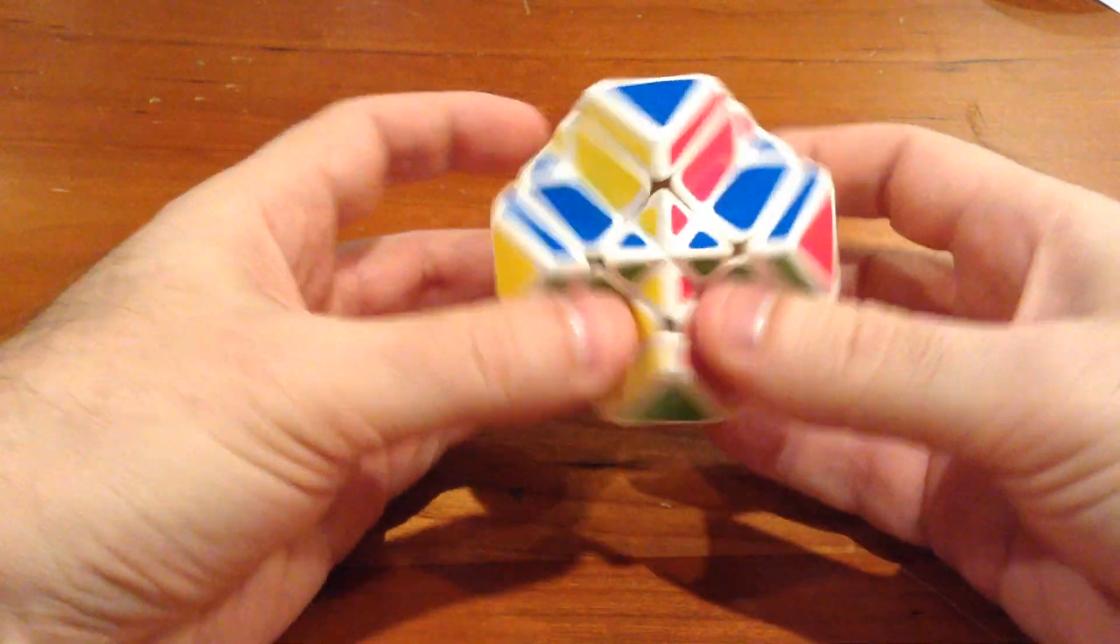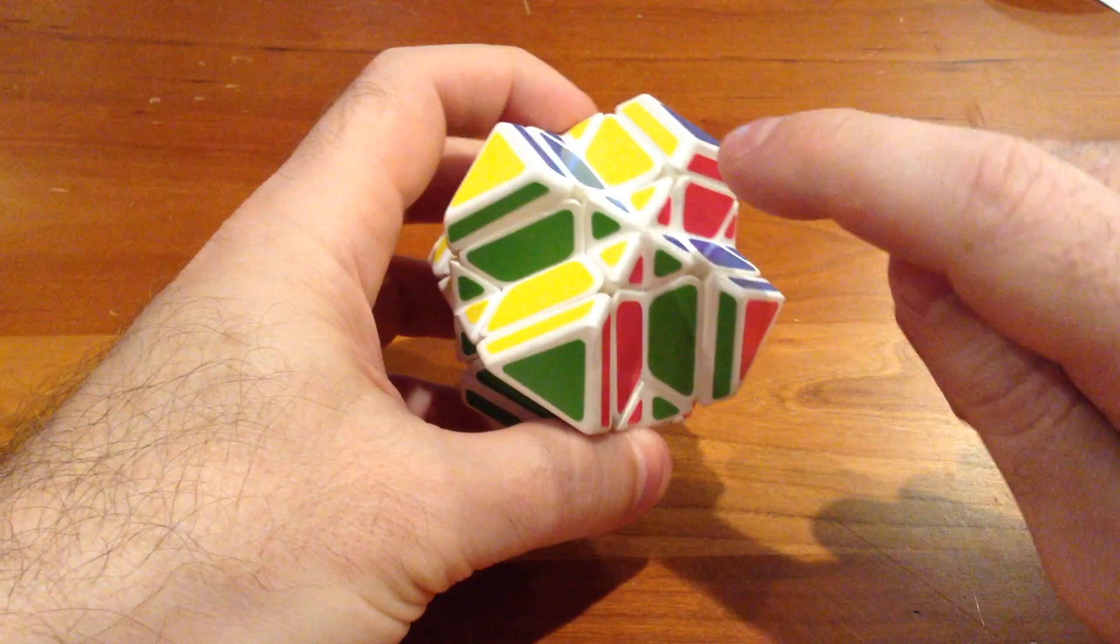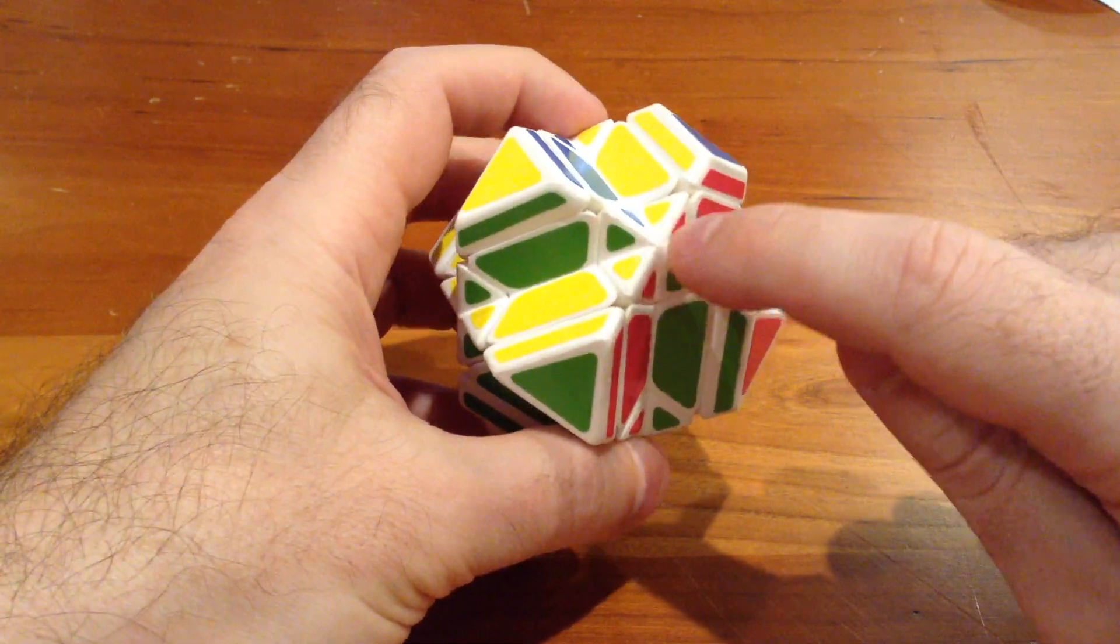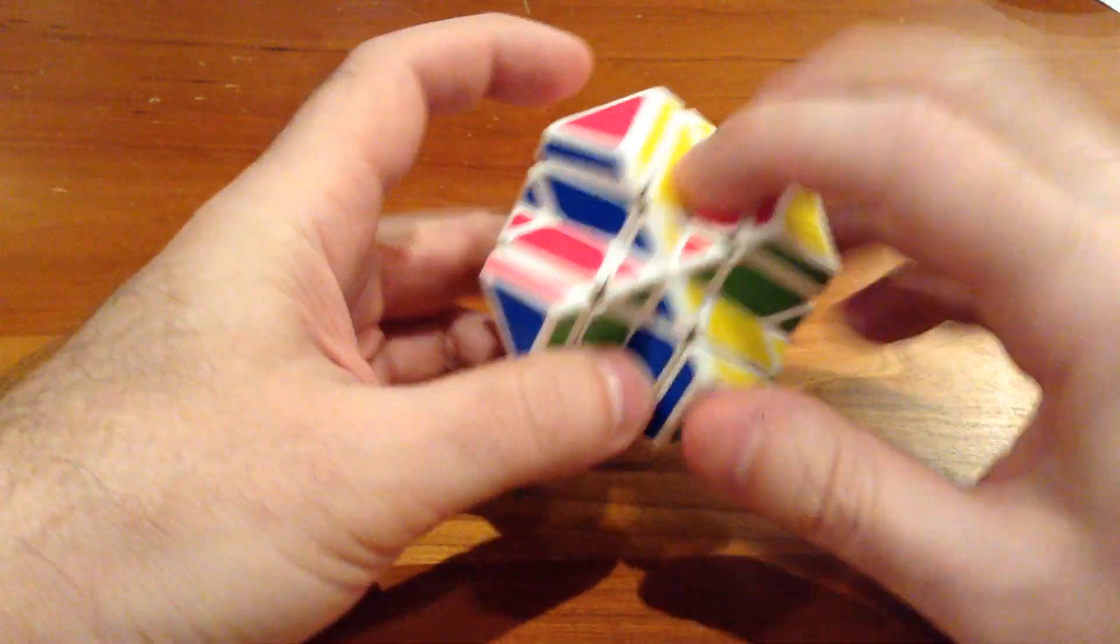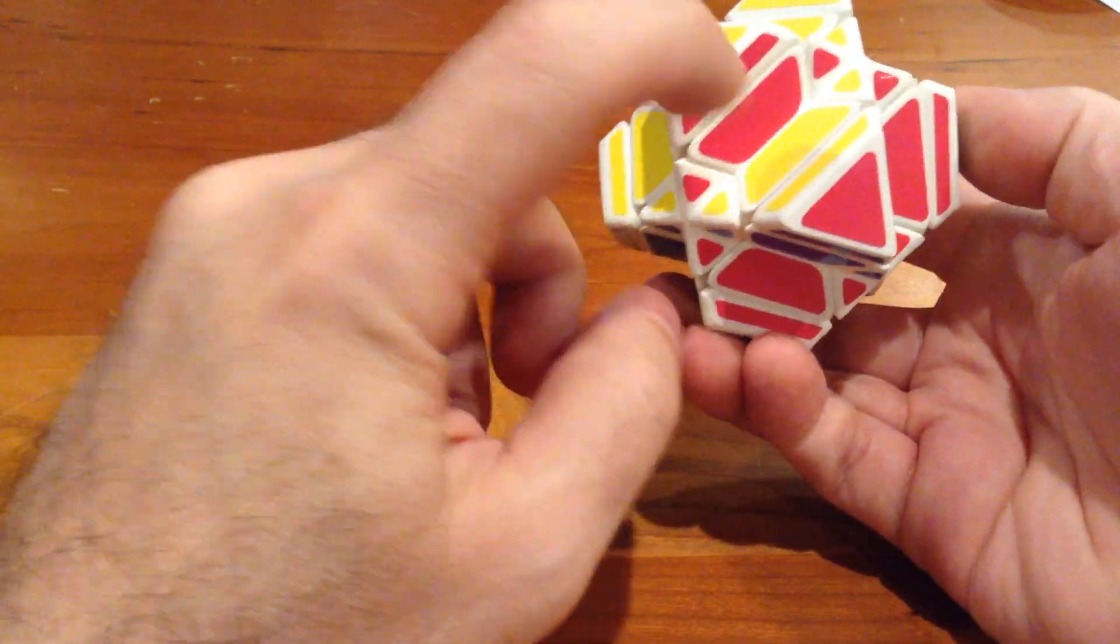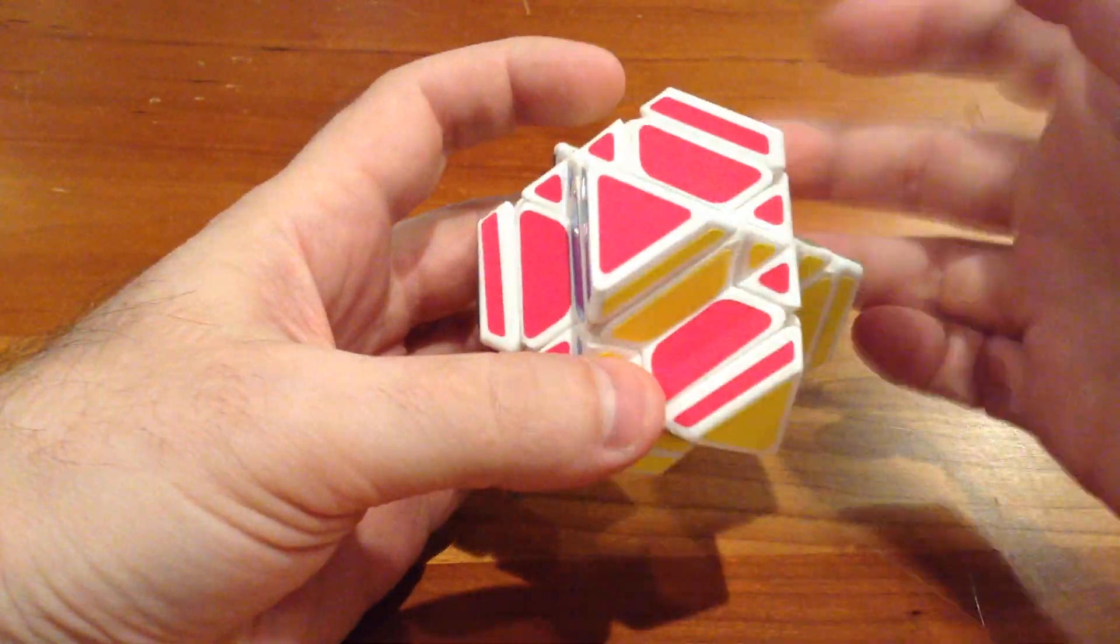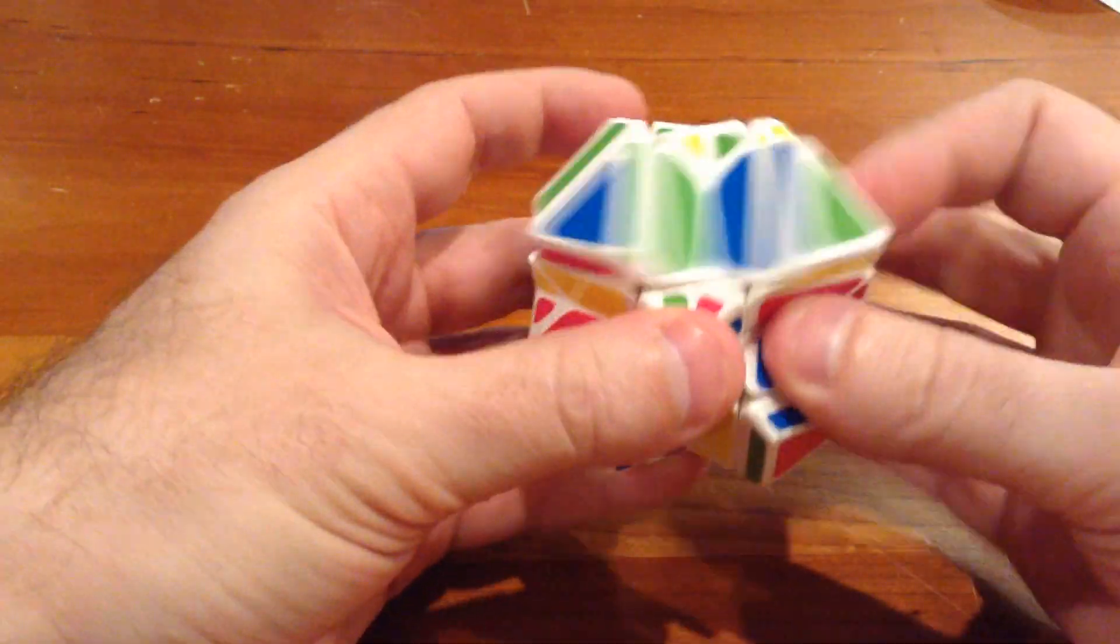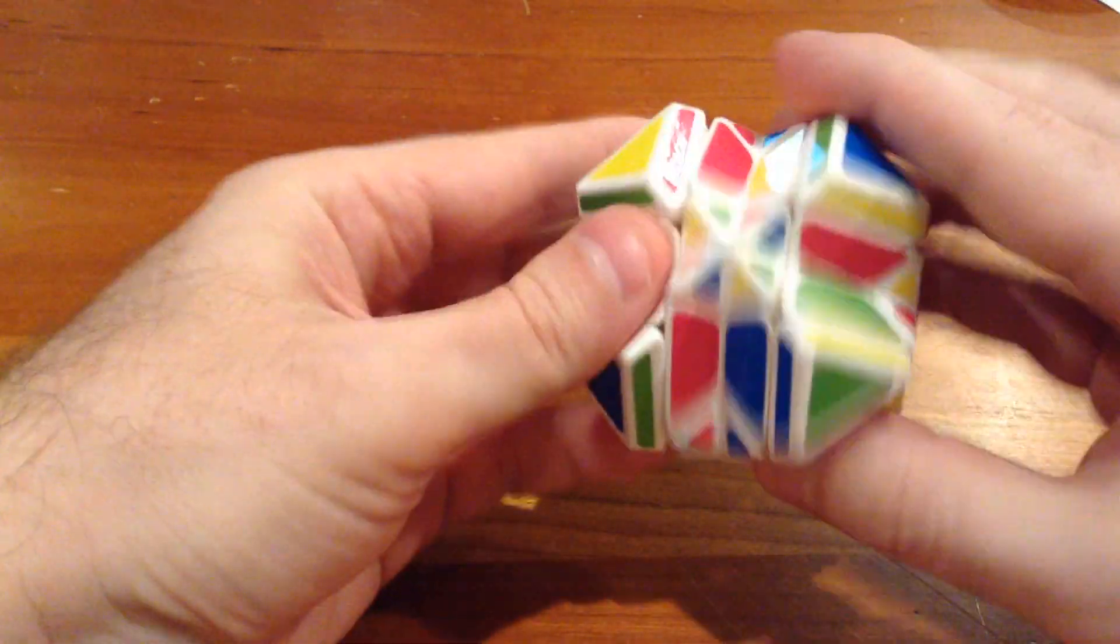Actually, before I scramble it, the two things we're going to have to watch for during the solve are going to be center rotations, and then there is a chance for a parity because opposite edges will share the same colors. So here I've got pink and yellow, and here I've got pink and yellow. So sometimes you have to swap those in the course of the solve, and we'll see if we get that to happen. So let me scramble this up.